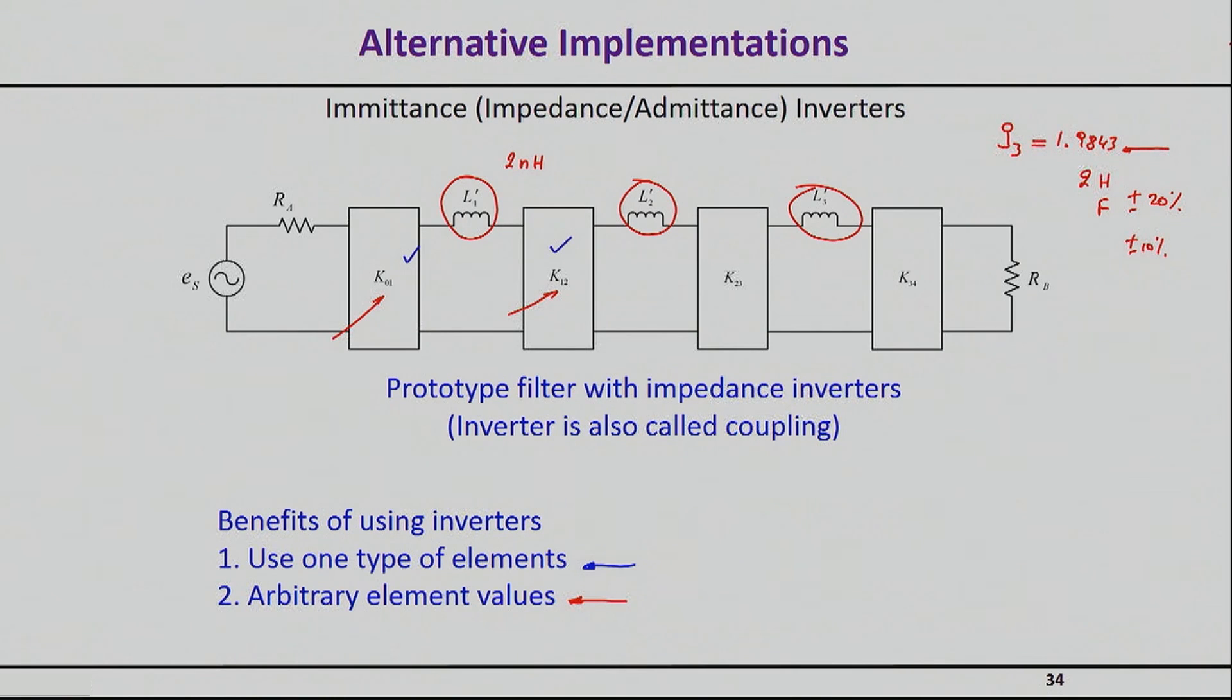So this is a real advantage, which is not just true for the low-pass prototypes, but particularly for the band-pass filters or the band-stop filters, which we're building resonators, and there we have to control the impedance of the resonator. And a lot of times, the impedance of the resonator, which is the equivalent of saying now here the value of 2 nano Henry, is something that we have limited control over based on our fabrication process.